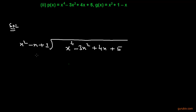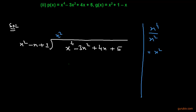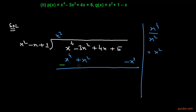To find the first term in the quotient, we divide x⁴ — the first term of the dividend — by x², the first term of the divisor, giving x². We multiply x² by all three terms of the divisor to get x⁴ - x³ + x². Since there is no x³ term in the dividend, we write x³ here. Now we change the sign and cancel, leaving x³ - 4x² + 4x + 5.